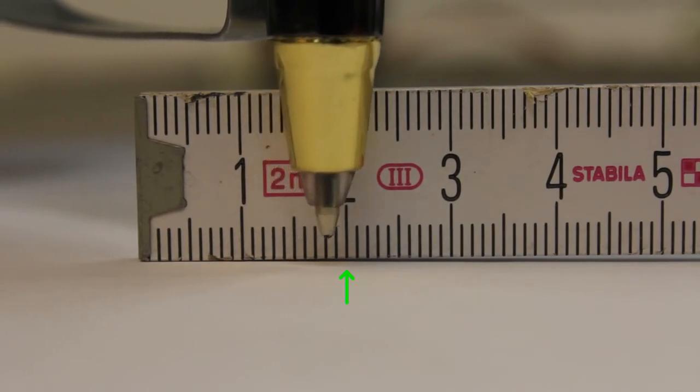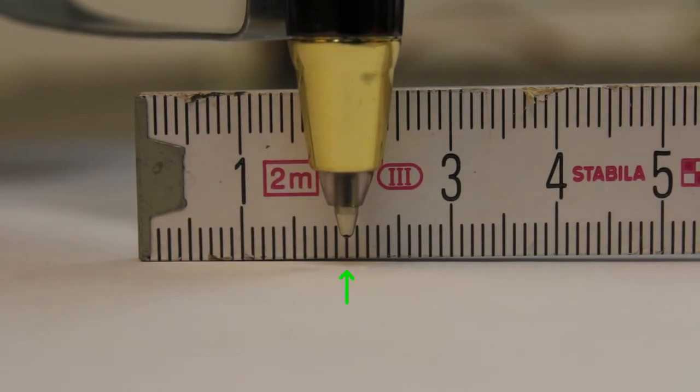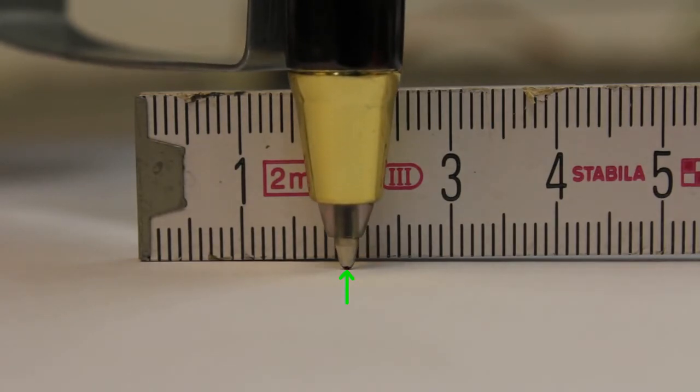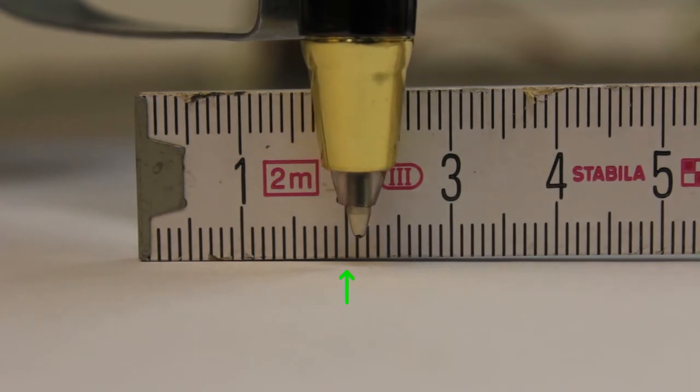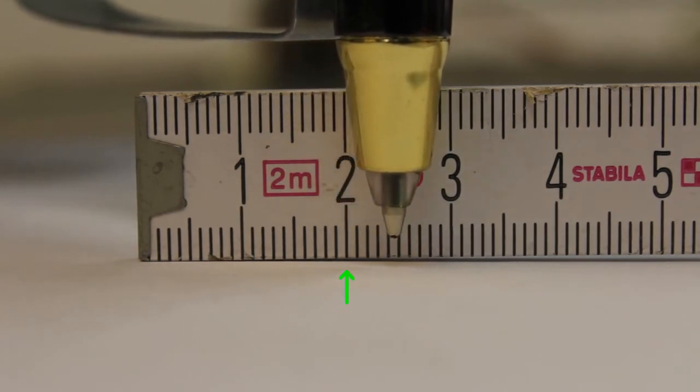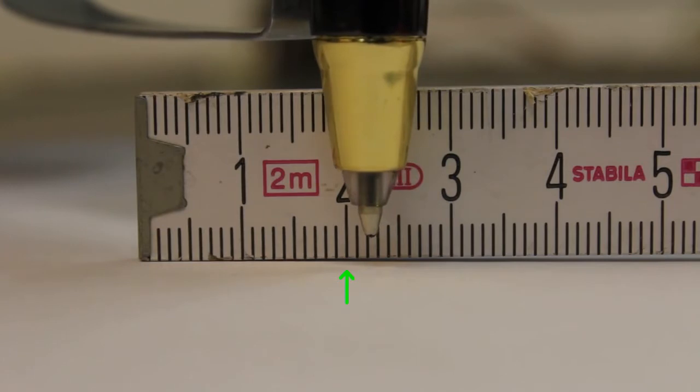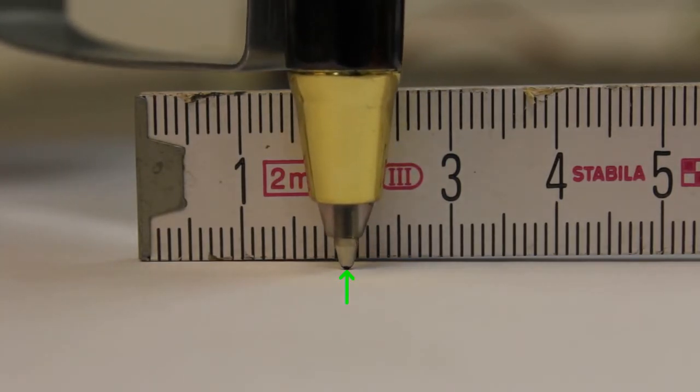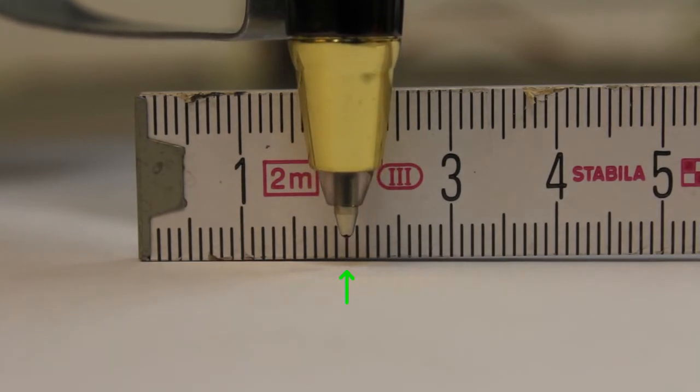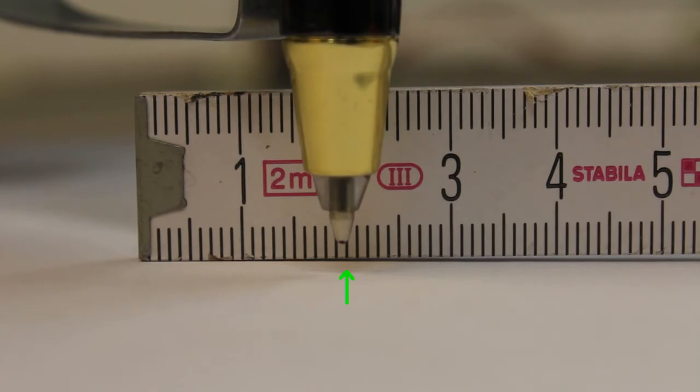A second criterion for the quality of a CNC machine is the accuracy while driving the pen to one point from different directions. As you can see, it is performing that test with almost no visible error.